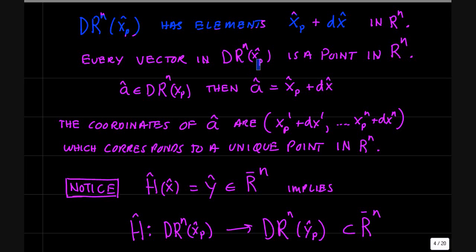Now notice that even though we have this new space DR^n of x_p, every vector in DR^n of x_p is a point in R^n, so for example, a vector a that's an element of DR^n at x_p is written as x_p plus dx, and clearly this has coordinates in R^n. I wanted to mention this because sometimes when we're talking about tangent spaces and these local spaces of differentials, they start to seem a little bit divorced from the original manifold.